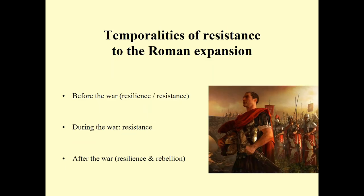Looking at resistance to Roman expansion, we can distinguish different types of resistance associated with different temporalities: before the Roman war, where we see strategies of resilience and resistance; during the war itself; and also after, with processes of resilience and moments of rebellion. I'm focusing mostly on communities that actively resisted expanding Roman power, though there were also communities and individuals that had close contacts with Roman power before the conquest, adopting numerous elements in regions where conquest was not as violent.